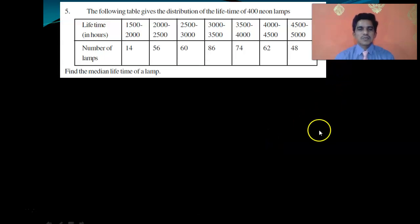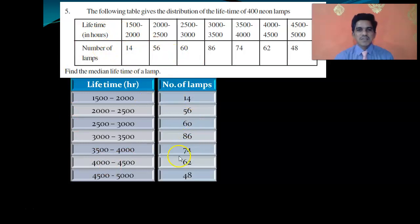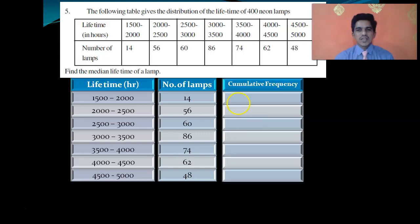We will take one more example so you can get this concept much clearer. The following table gives the distribution of lifetime of 400 neon lamps. We have recorded the lifetime in hours. This has exclusive classes. First we will take lifetime in hours, then number of lamps, and we will write the cumulative frequency.